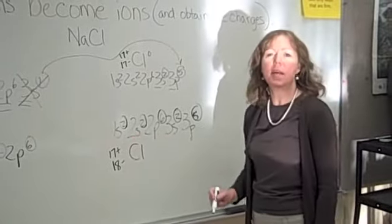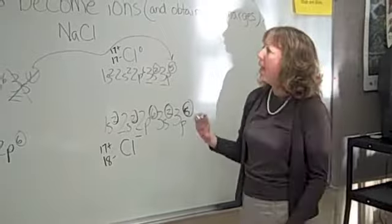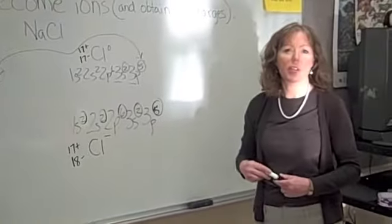So a positive 17 and a negative 18 give us an overall negative 1 charge. And that's how atoms become ions and obtain the charges.